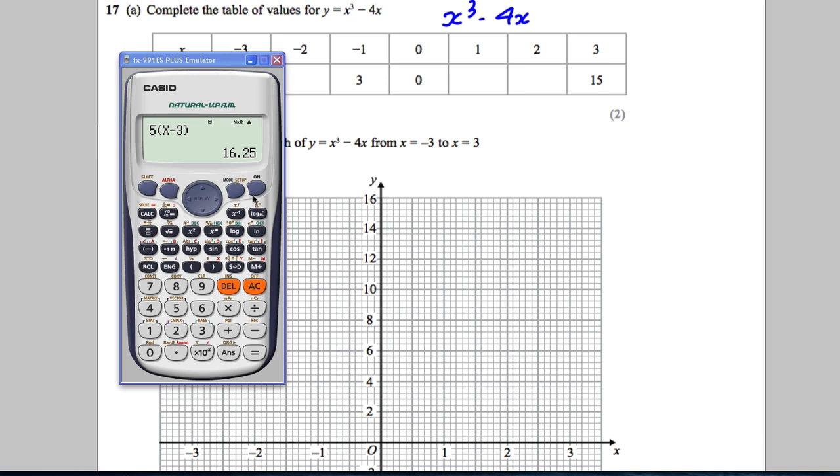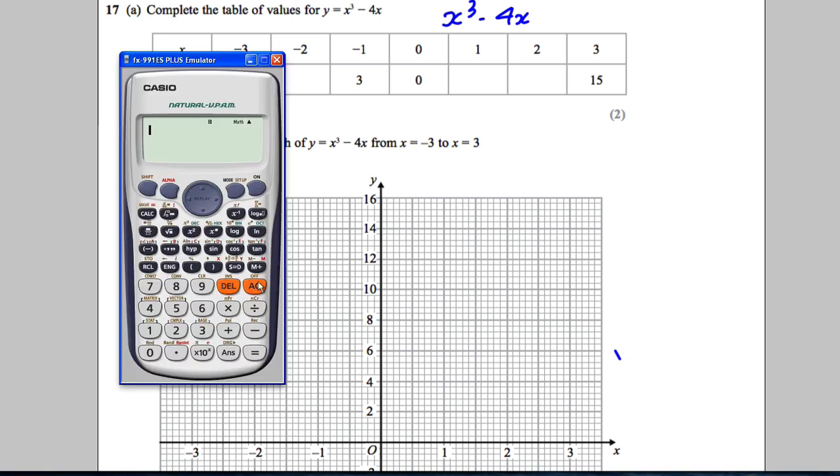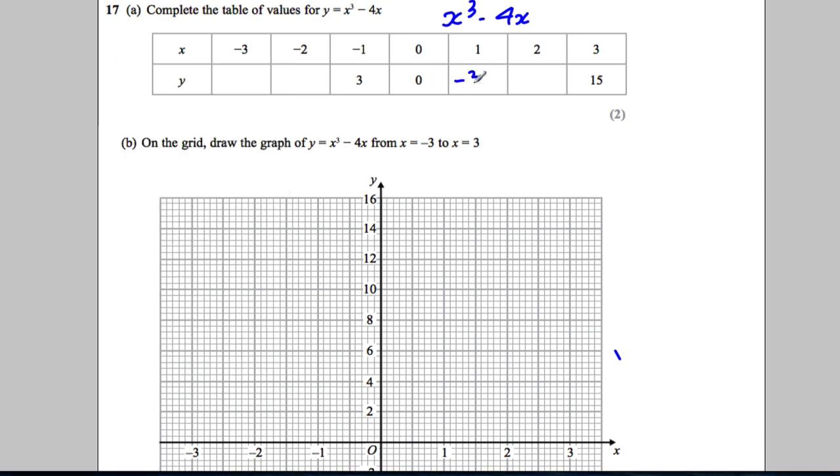Okay, so here we go. The first thing is you could just use brackets and we're going to substitute in 1 first. So we go 1³, subtract, and then we're going to put 4 in brackets and put our 1 in like that. I'm going to get -3.